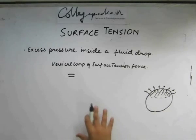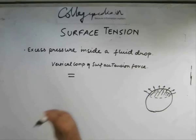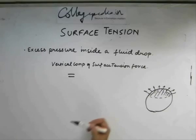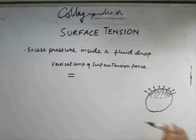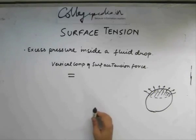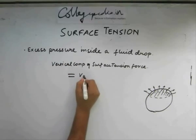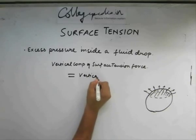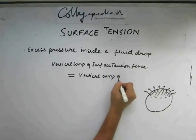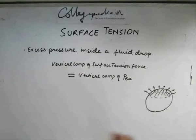Pressure exerts a radially outward force on the fluid surface, in all directions. For this sphere section, the pressure force acts outward in all directions, and this too has two components — one horizontal and one vertical. The vertical component of the pressure force will balance the vertical component of the surface tension force. So essentially, the excess pressure balances the force due to surface tension.